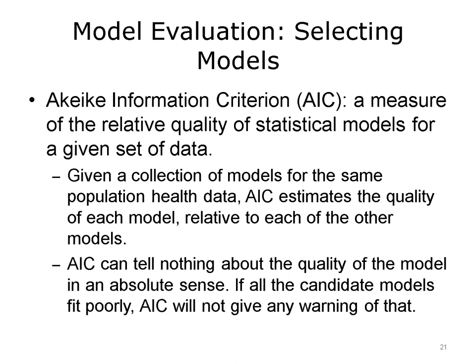Selecting the most useful model, especially when the outcome is not simply binary, is even more complex. The Akaike Information Criterion, or AIC, represents a complex measure of the relative quality of statistical models for a given set of data. Given a collection of models for the same population health data, AIC estimates the quality of each model relative to the others. However, AIC does not reveal the quality of the model in an absolute sense, and even if all candidate models fit poorly, AIC will not give any warning.